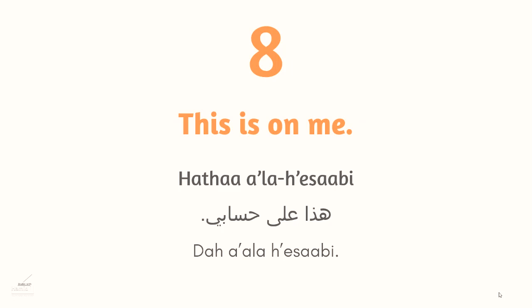Phrase eight: هذا على حسابي — 'this is on me.' هذا means this, على is a preposition meaning on, and حسابي means my account or my bill. In Egyptian Arabic we say دا instead of هذا, so: دا على حسابي. The prepositions in Arabic are covered in a separate dedicated video.